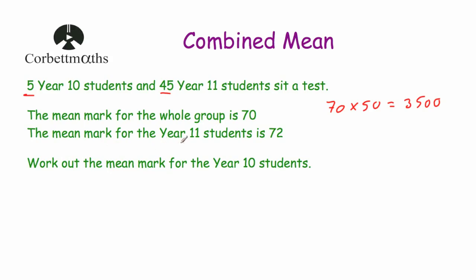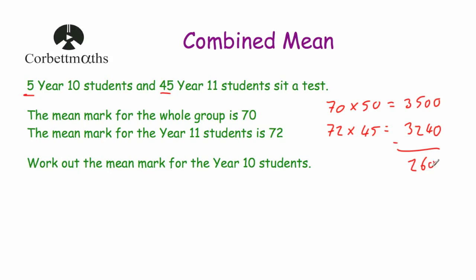The mean mark for the Year 11 students is 72. There are 45 Year 11 students, so if we take 72 and multiply that by 45, we'll find the total marks obtained by the Year 11 students. So 72 multiplied by 45 is equal to 3,240 marks. If we take away the number of marks that the Year 11s got from the grand total — 3,500 minus 3,240 — we get 260. So the five Year 10 students altogether scored 260 points. If we divide their total by the number of students, 5, we get the mean mark for the Year 10 students. So 260 divided by 5 is equal to 52.